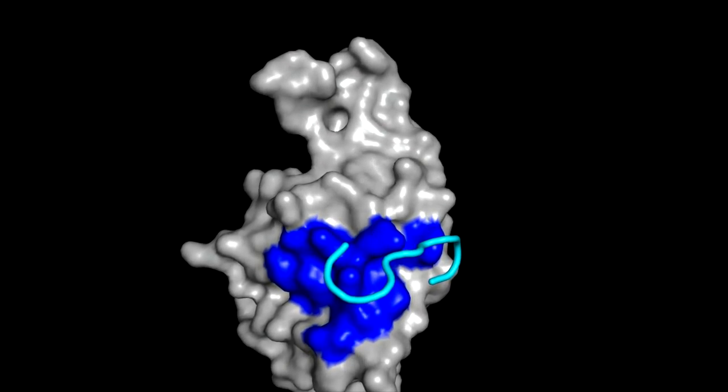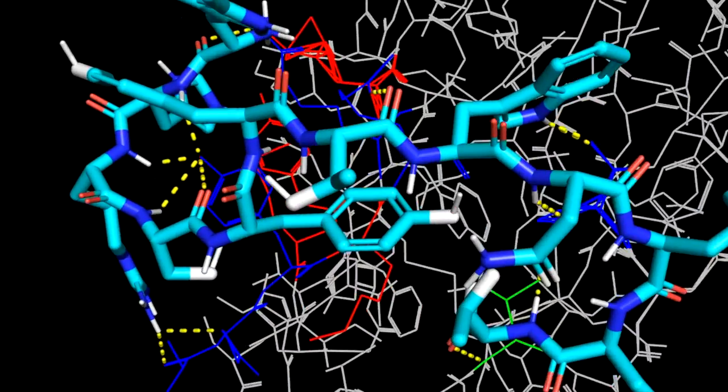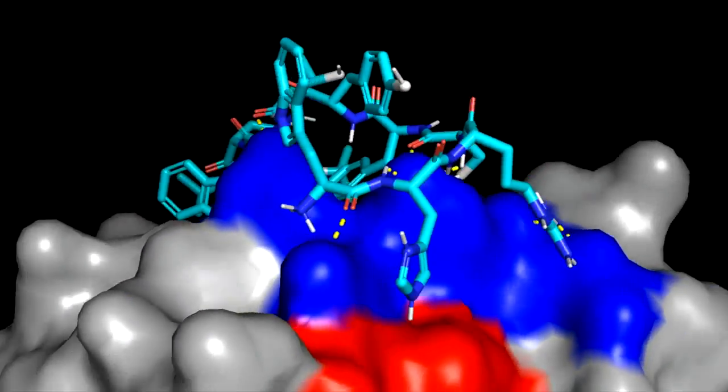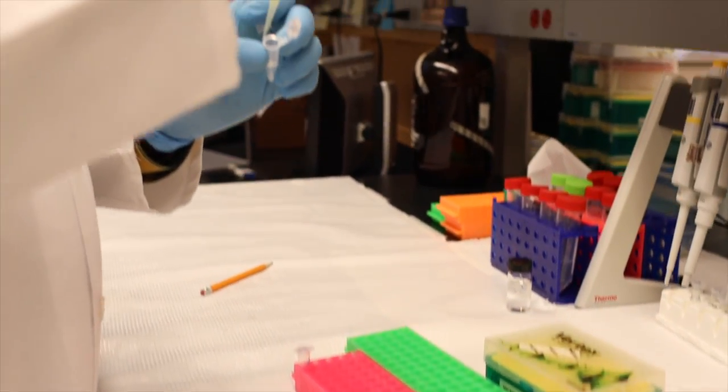Once we get a peptide sequence we can do the modeling that you see from the computer. The binding of the peptide to the protein, we can see how it binds, and then we select some of the peptide sequences.